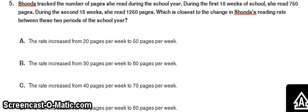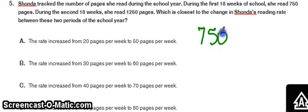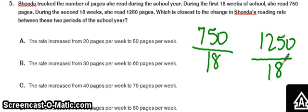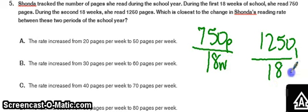Last one: Shonda tracked the number of pages she read during the school year. During the first 18 weeks of school, she read 750 pages. During the second 18 weeks, she read 1,250 pages. Which is closest to the change in Shonda's reading rate between these two periods? So I'm going to divide to find each rate: 750 divided by 18 weeks for the first period, and 1,250 divided by 18 weeks for the second. This is pages over weeks for each semester.